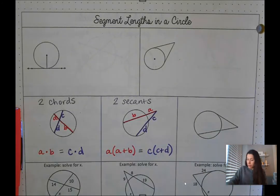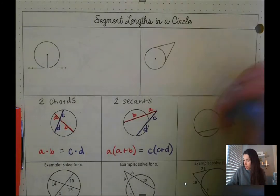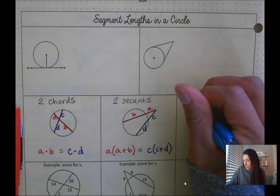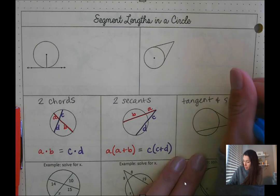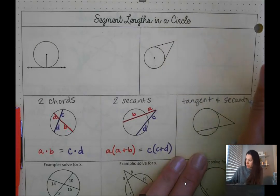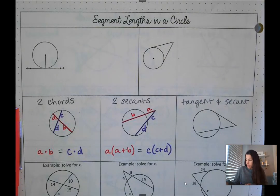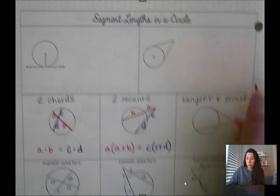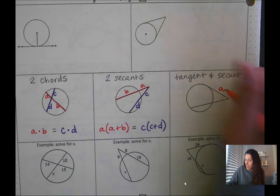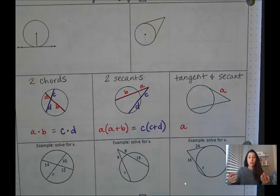Our final situation here is a tangent and a secant. With our tangent segment that would be this right here. Remember tangent only intersects a circle at one place. I'm going to call this segment A and A is going to be multiplied with the entire length of the segment which is also A.